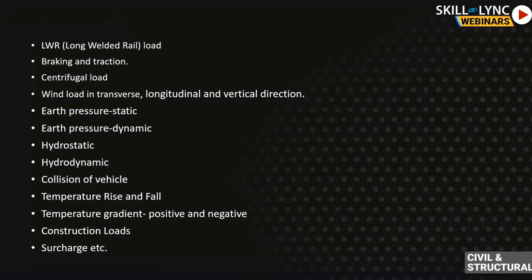Vehicle collision load — that's why crash barriers are provided. For temperature, there are two types: atmospheric variation (e.g., maximum 50°C in summer, minimum -2°C in winter) affecting elongation and sectional variation; and temperature gradient (positive and negative/reverse), as defined in IRC 6. Construction load is very important — we need to check its effect on the foundation and superstructure. Generally it doesn't govern, but in balanced cantilever construction it can have huge effects.